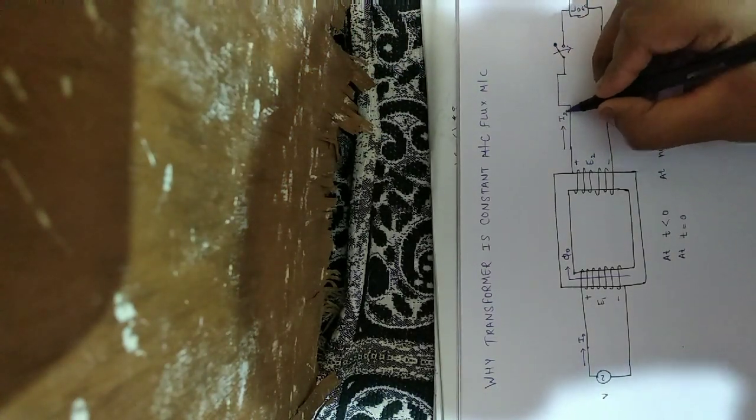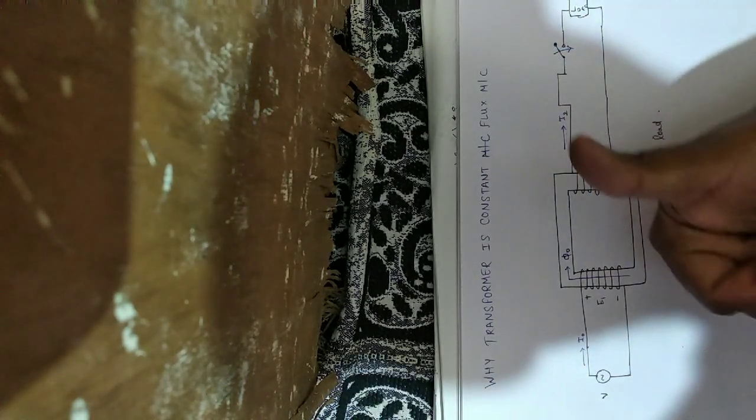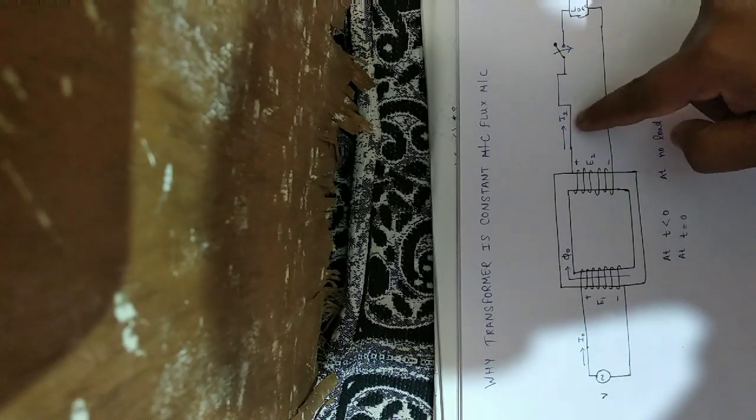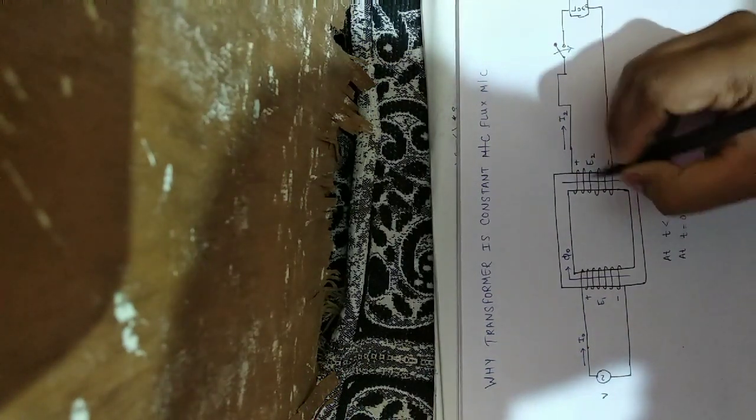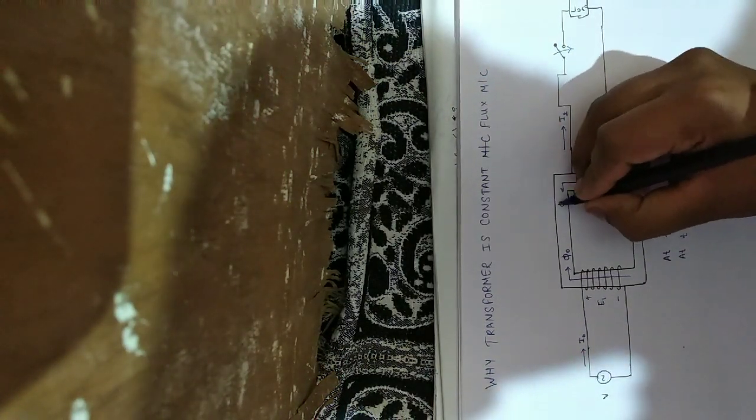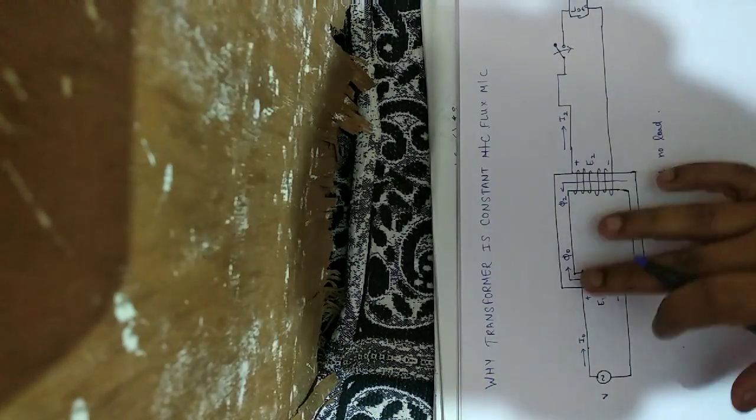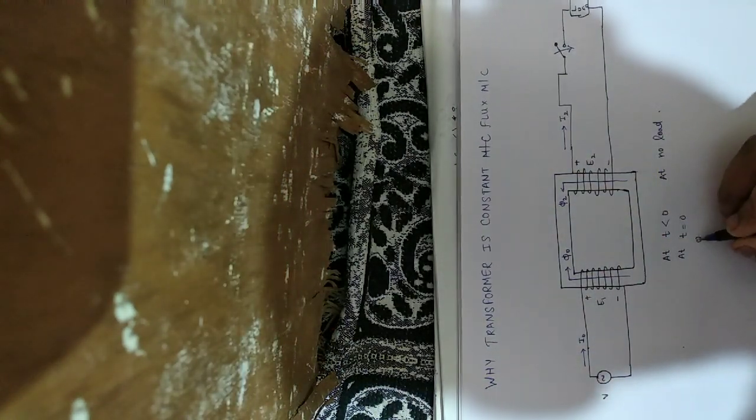Due to which current i0 is flowing here. So due to this i0 current, the secondary current flux is flowing in this direction, this is phi2. So the net flux will be phi0 minus phi2.